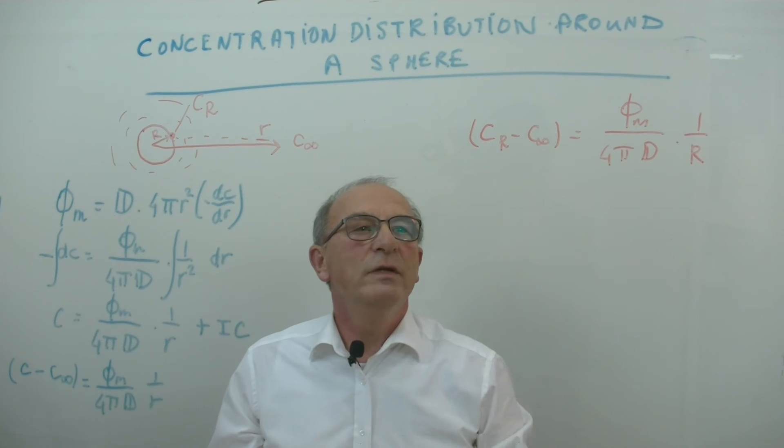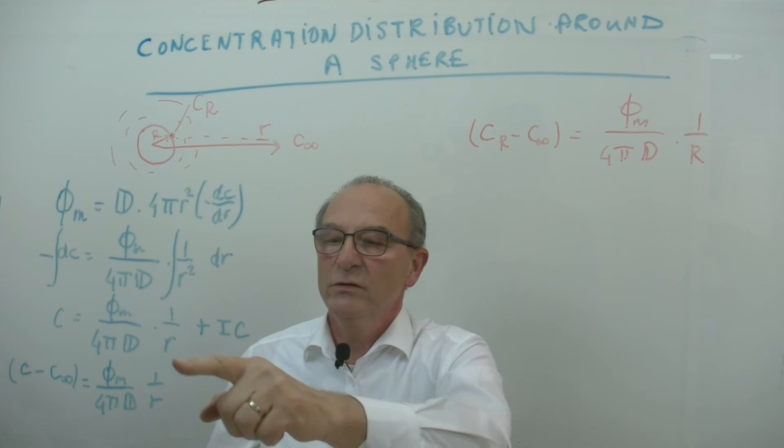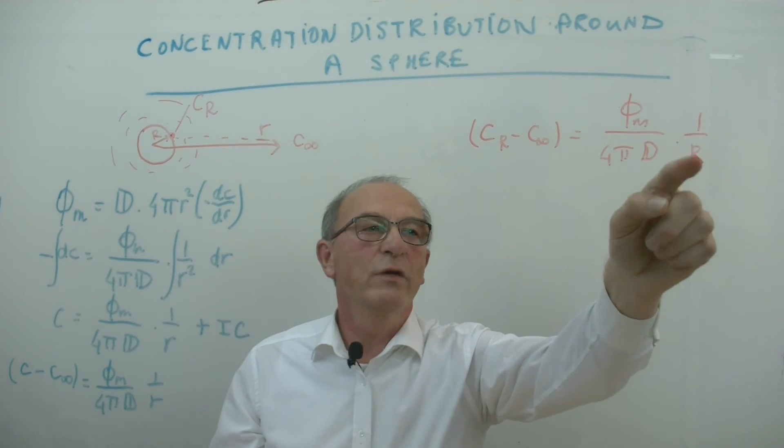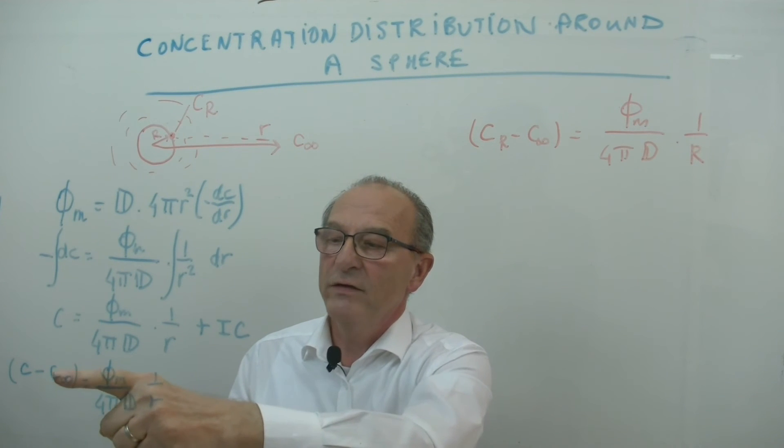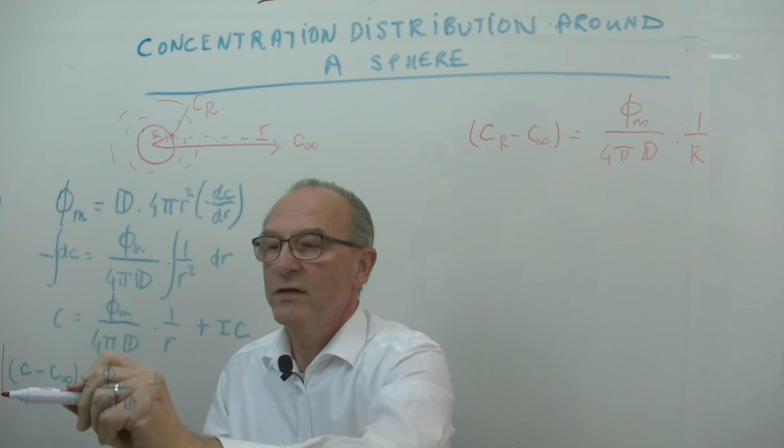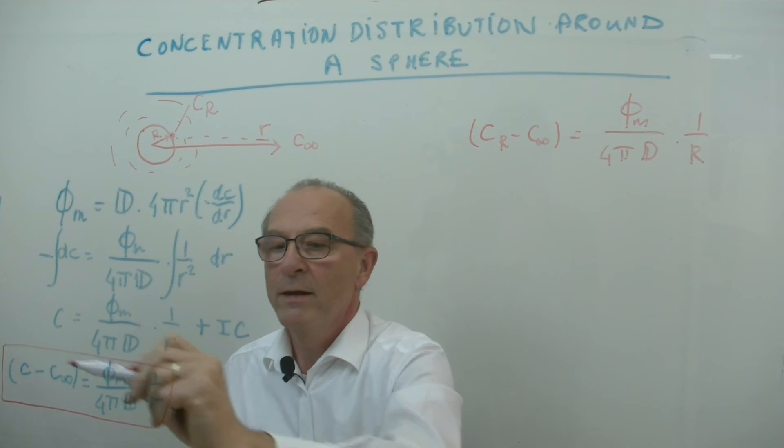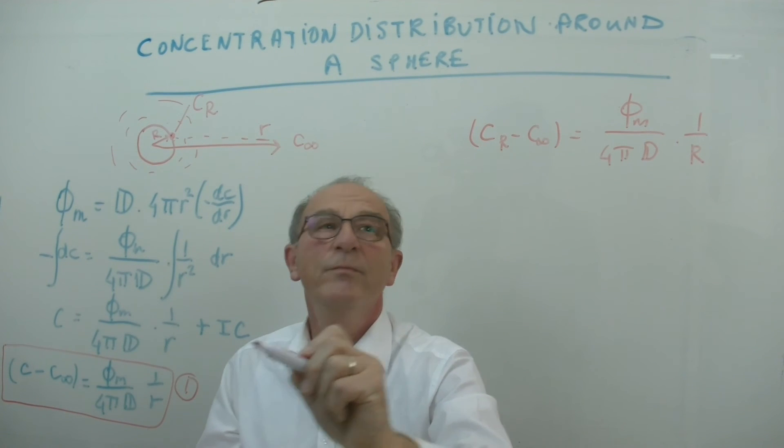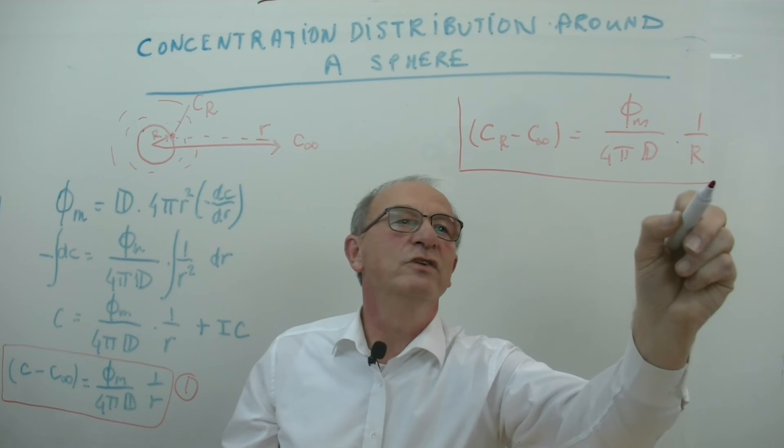You see that in both equations this is 1 over R, this is 1 over the large one. So now if we divide this equation, if we take this equation, let's say this is equation 1 and we take equation 2.